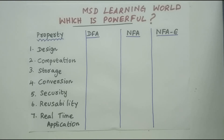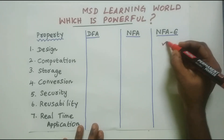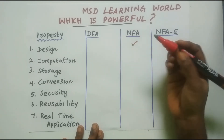The user can easily create NFA-epsilon because they can have any number of epsilon transitions, any number of transitions for each input symbol, and any number of final states. Similarly, the user can also create NFA machines very easily, as it does not need to have a transition for each input symbol for each state. So the user can easily create NFA and NFA-epsilon, and from the user's design point of view, NFA-epsilon and NFA are more powerful than DFA.